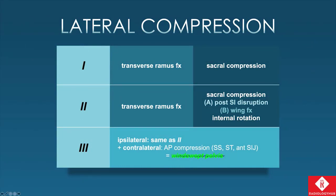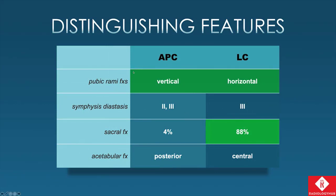In review: transverse pubic rami fractures are seen in all lateral compression types. We have sacral compression posteriorly, and we start disrupting either the ligaments with LC2A or the iliac wing fracture with LC2B, with internal rotation. When we move across to the contralateral side and create an anterior-posterior compression, we've got an LC type 3 injury — our windswept pelvis. As distinguishing features: look at the rami fractures and their orientation. Sacral fractures are really what's going to separate your lateral compressions from anterior-posterior compressions. Also look for posterior acetabular wall fractures and posterior hip displacements with APC injuries.